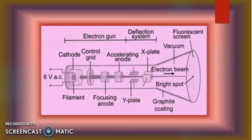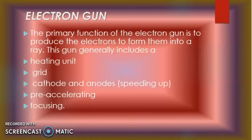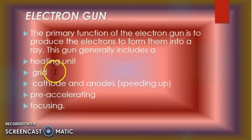Let's discuss in detail one by one. The electron gun's first purpose is to provide electrons in the form of a ray. It includes a cathode, a heater, and a filament. The heater heats the filament and produces electrons. Then we have a grid that controls the flow of electrons. Then a cathode and pre-accelerator anode that speed up the electrons, along with focusing electrodes.